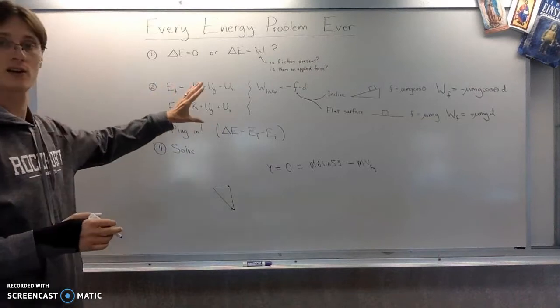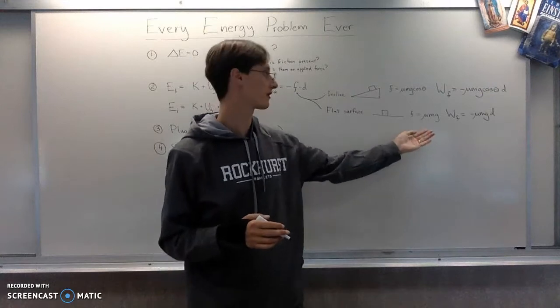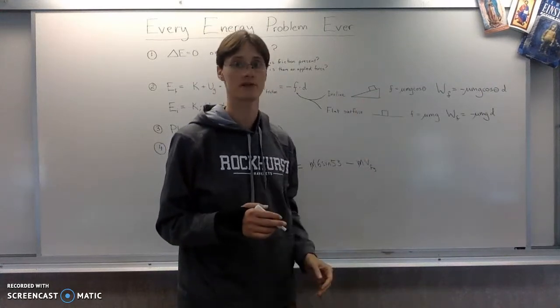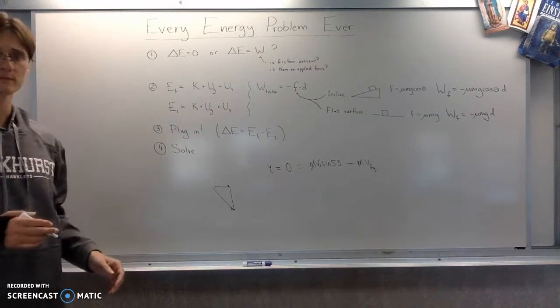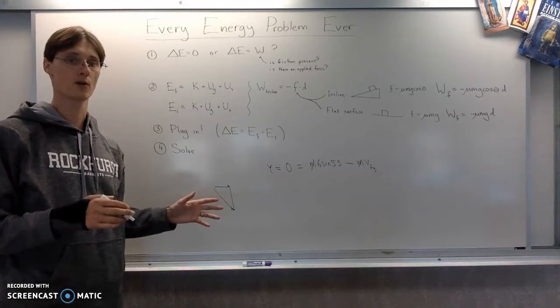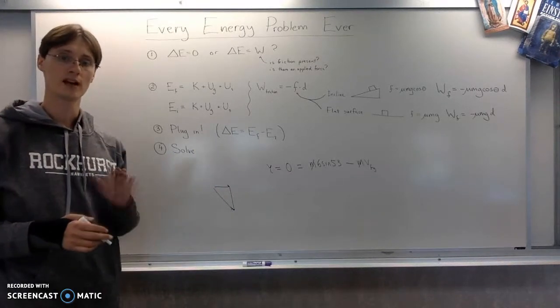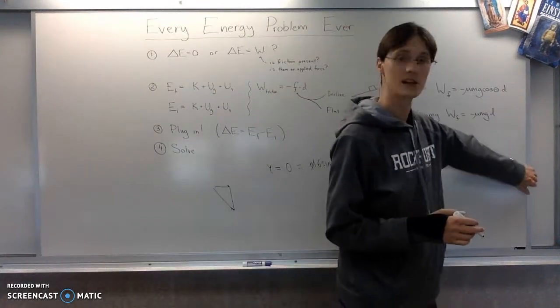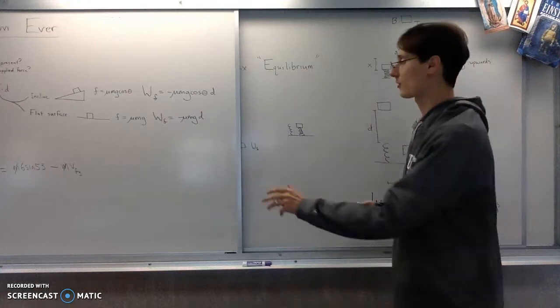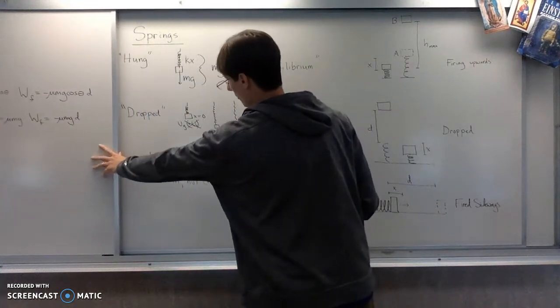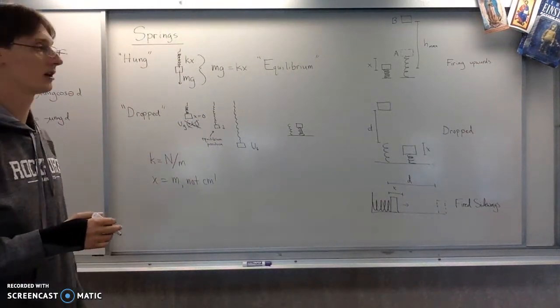Once you've got all that set up, including your calculation for work based on whether it's on a flat surface or a sloped surface, then you can plug in into your delta E equals either zero or work, and then solve for whatever you're supposed to solve for. We're going to see that applied to a couple of problems here now in part two related to springs. Now also by way of reminder, because I said this at the end of the last video, because I thought I was going to fit everything into one...